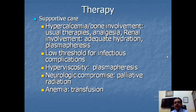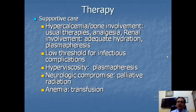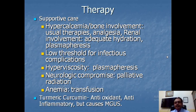Neurological manifestations are managed with palliative radiation. Anemia is corrected with RBC transfusion, thrombocytopenia is treated by administering platelet megaunits, and neutropenia is corrected with G-CSF colony stimulating factor, available as filgrastim.